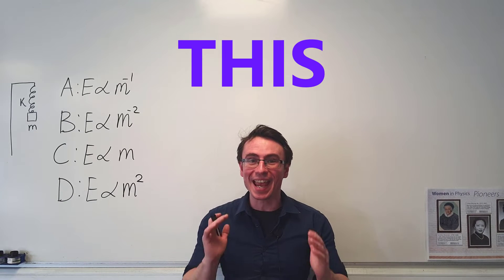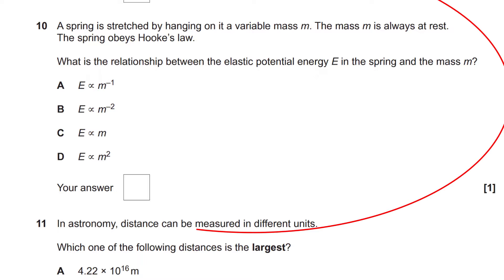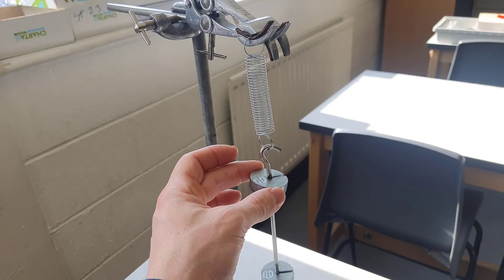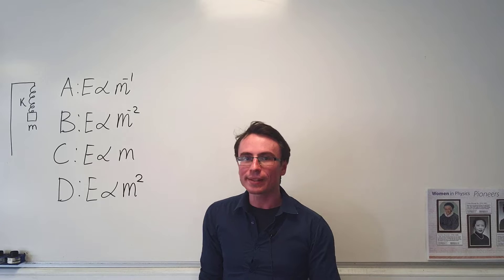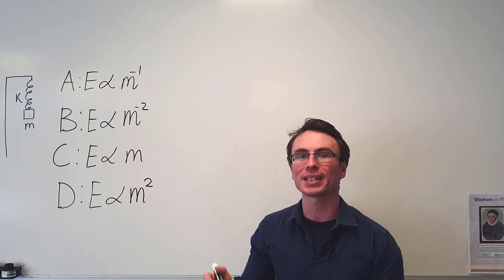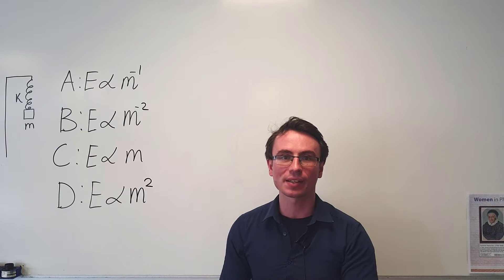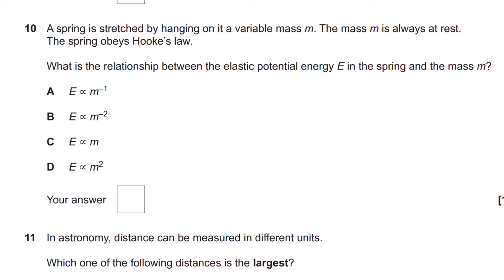Most people did not get this A-level physics multiple choice question correct. This is a question from the 2020 OCR Physics paper 1. We have a spring with a mass M that's attached at the bottom. The question is, what is the relationship between the elastic potential energy and the mass attached to the spring? Have a look at those options and choose a correct answer now.